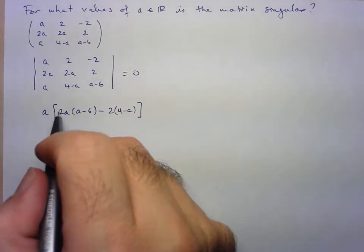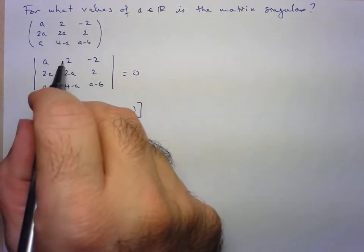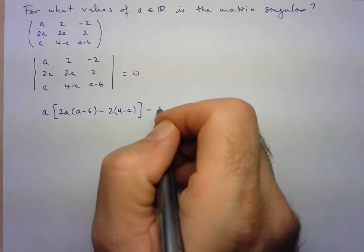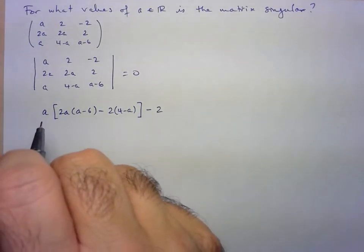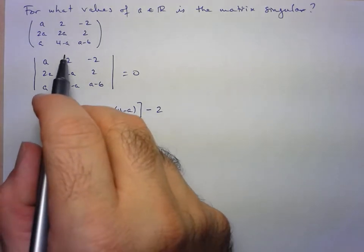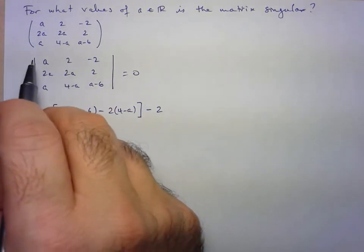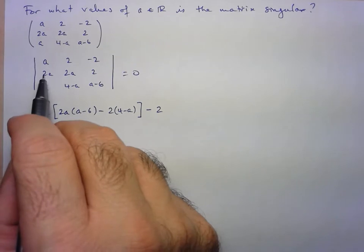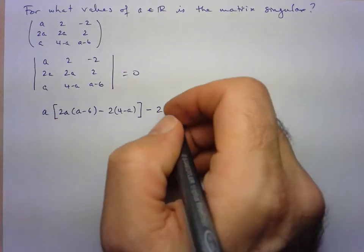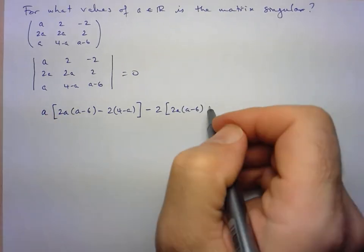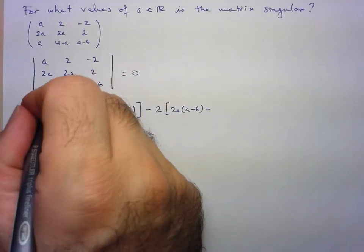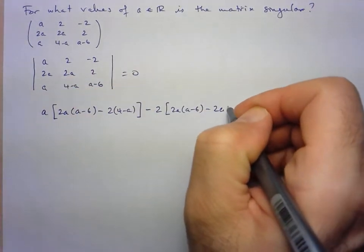So now the next term, remember that the signs alternate. So now I'm going to be subtracting the next term, 2, and multiplying it by the determinant of the remaining 2 by 2 matrix when I cross out this column and this row. So it's going to be 2A times A minus 6, and then minus 2 times A.